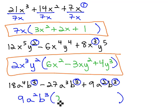18 divided by 9 is 2. a⁴ divided by a² leaves behind a², and the b³ divides out completely.